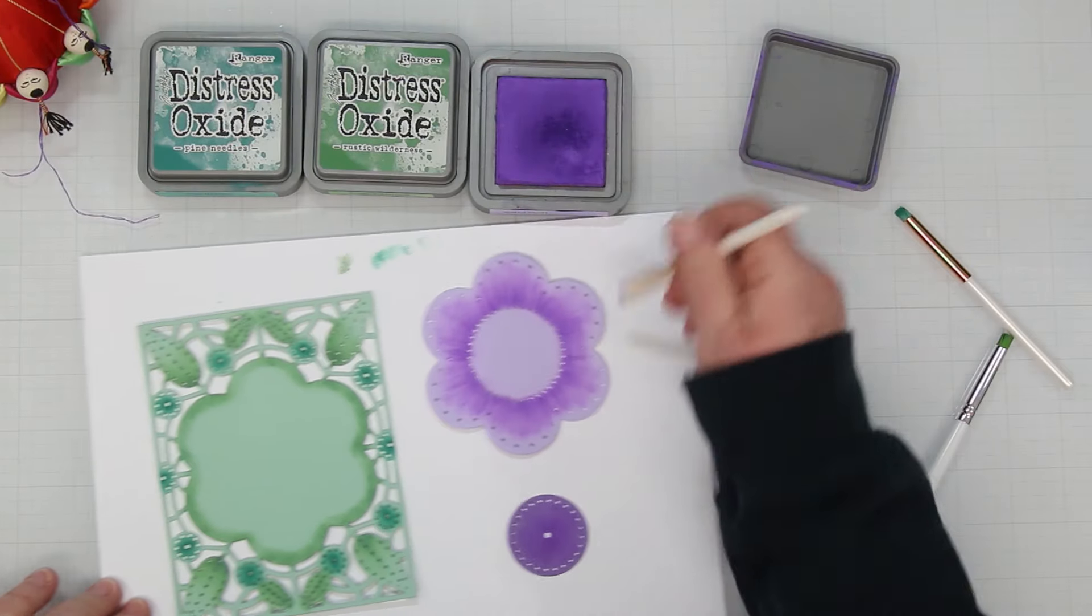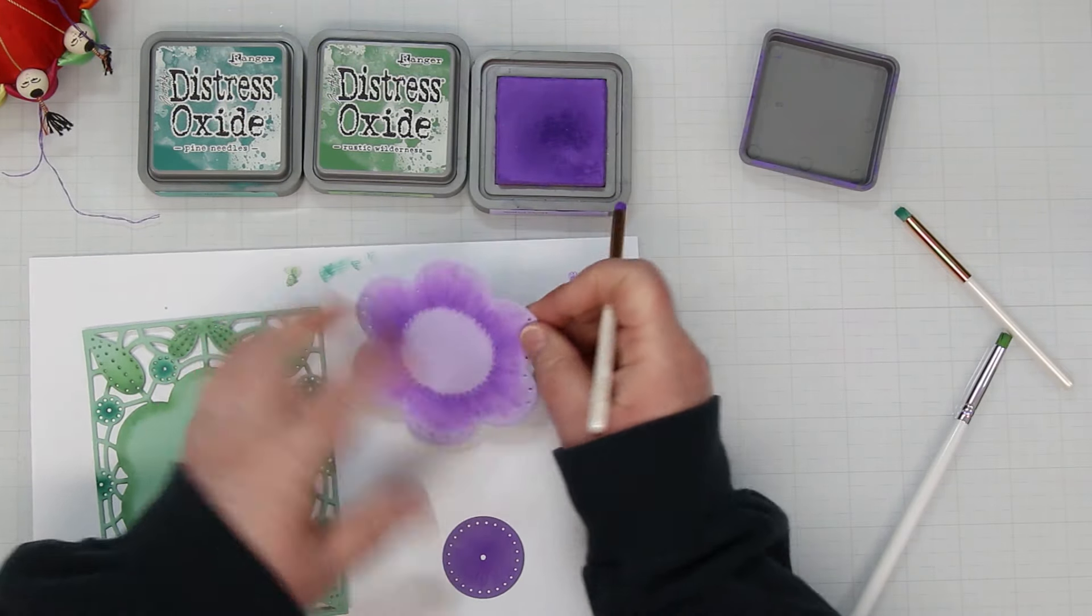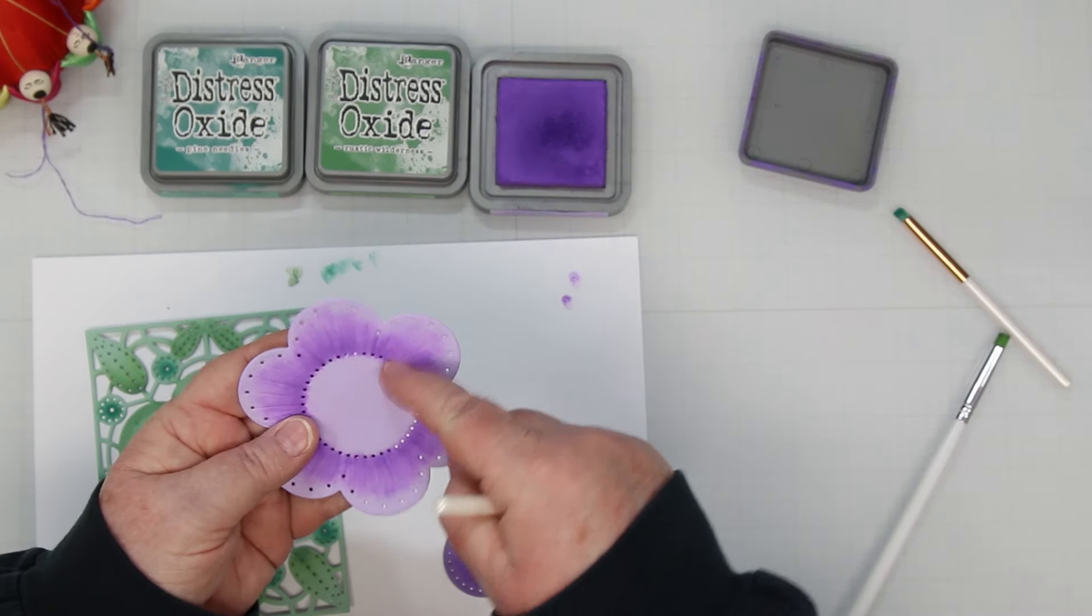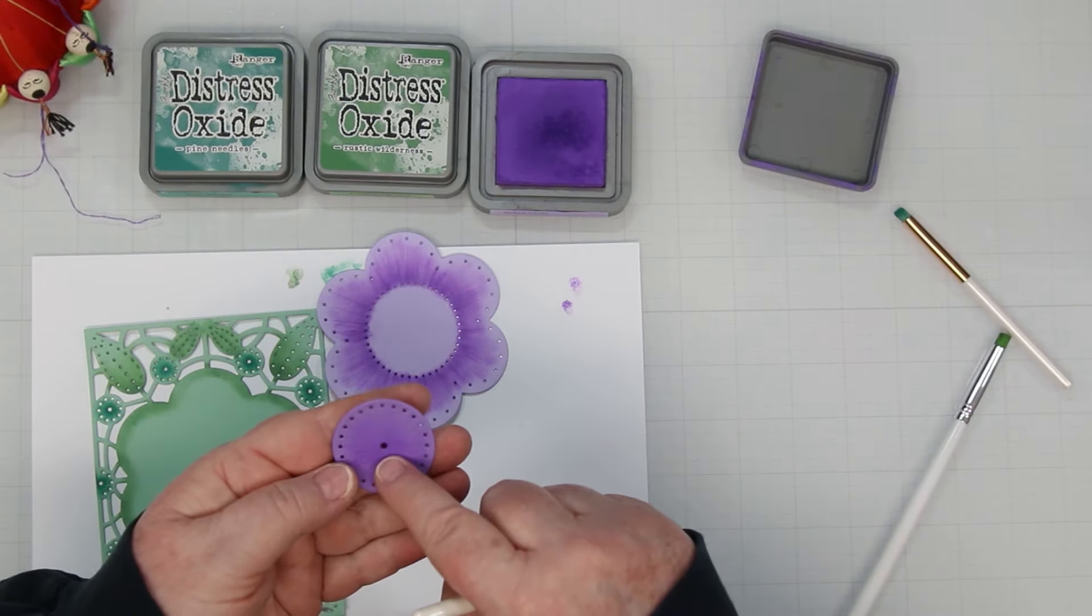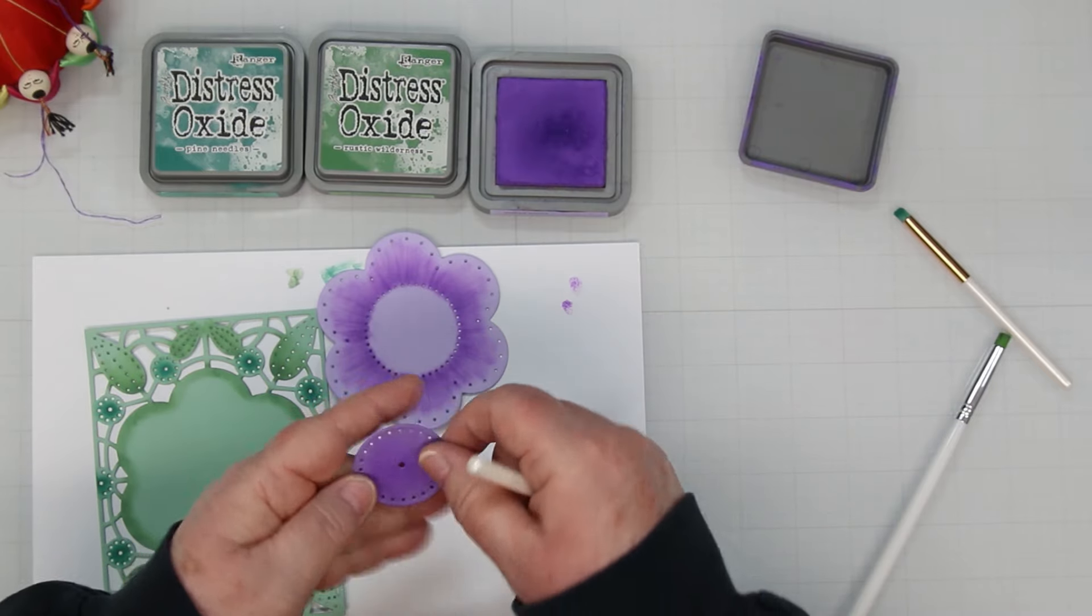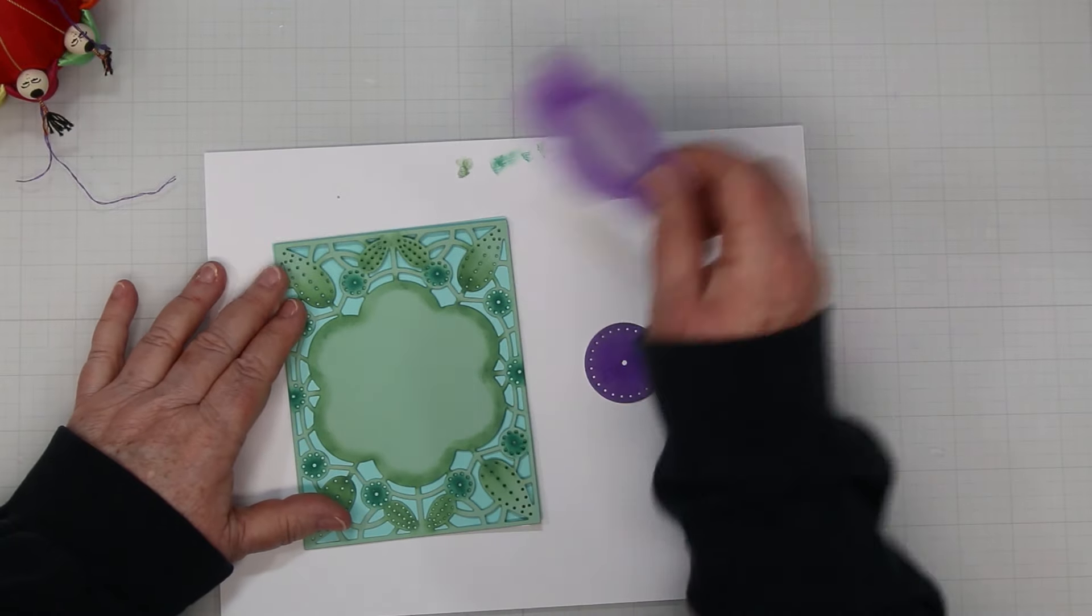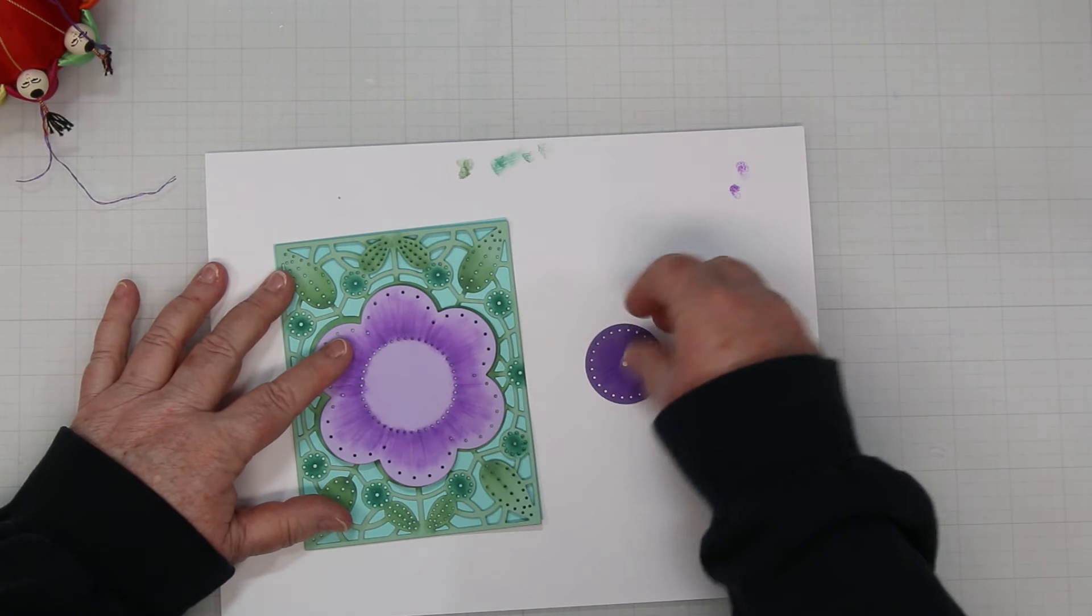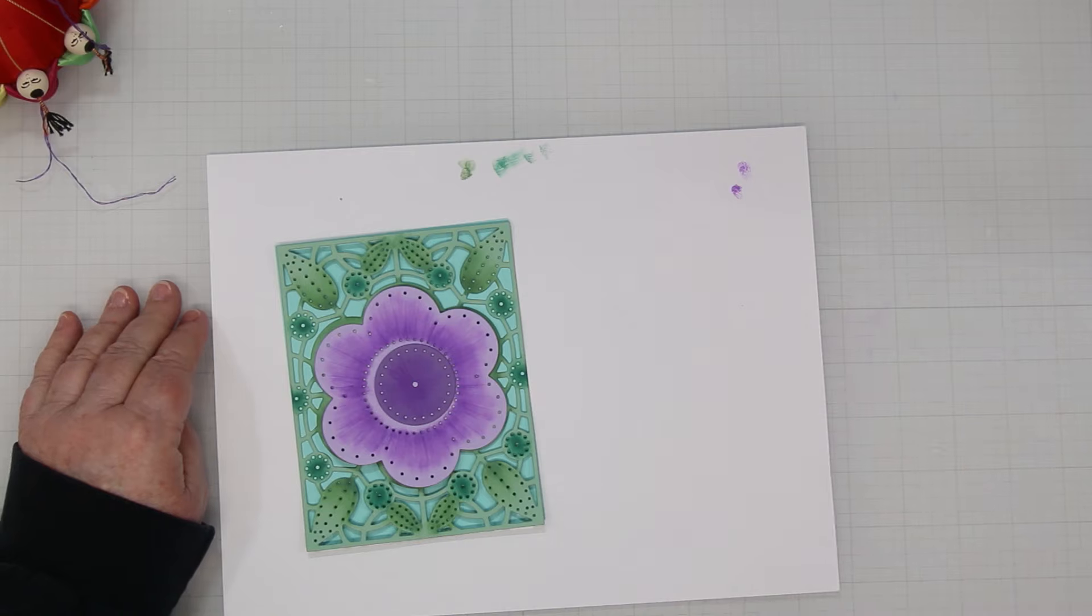So moving over to the flowers, starting with the large one, I'm using Wilted Violet on both of them and just again the flicking technique starting at the bottom and flicking up and just work your way around. And same with this pretty little center. To this I'm going to add a waterfall background piece and then these are how the flowers are going to lay over top. Okay that's my color scheme for today.